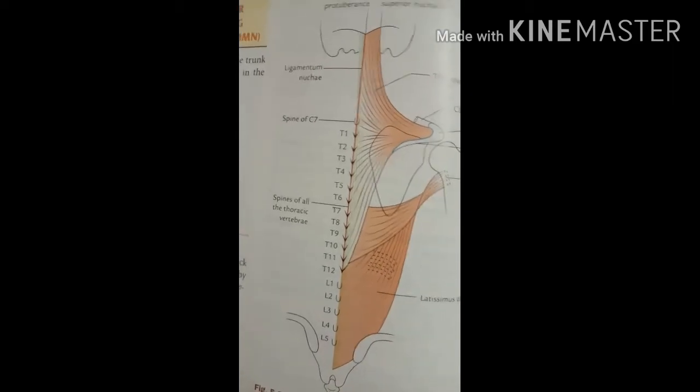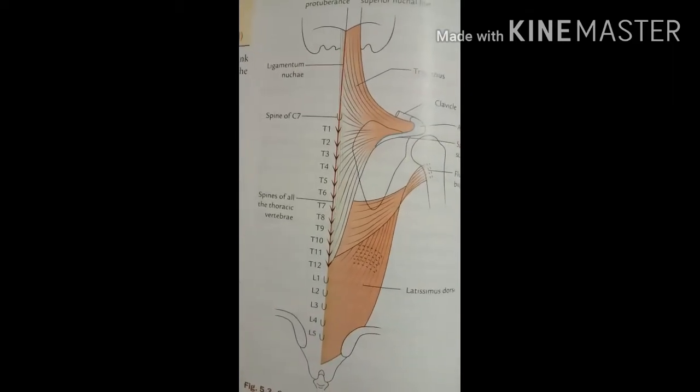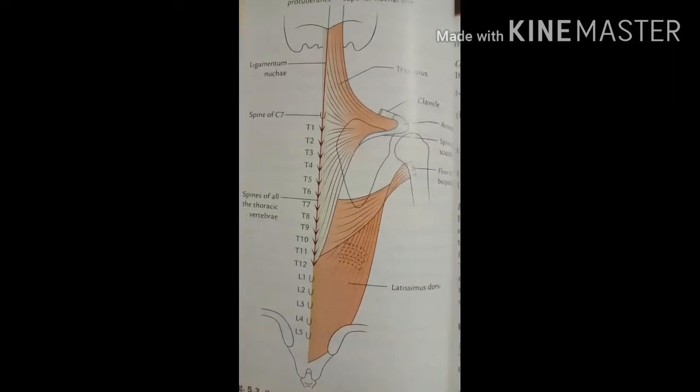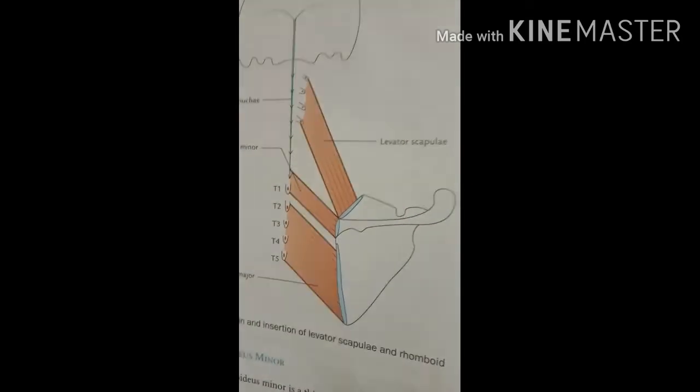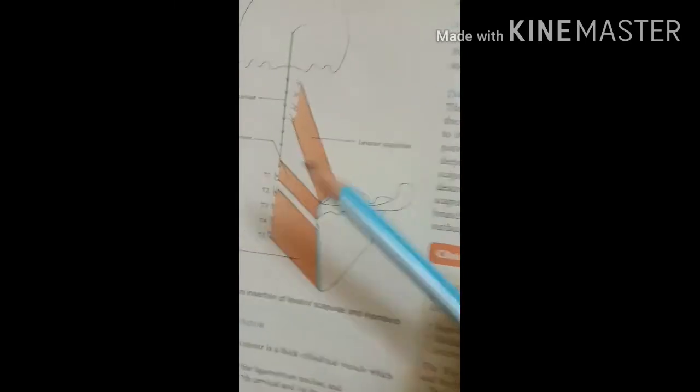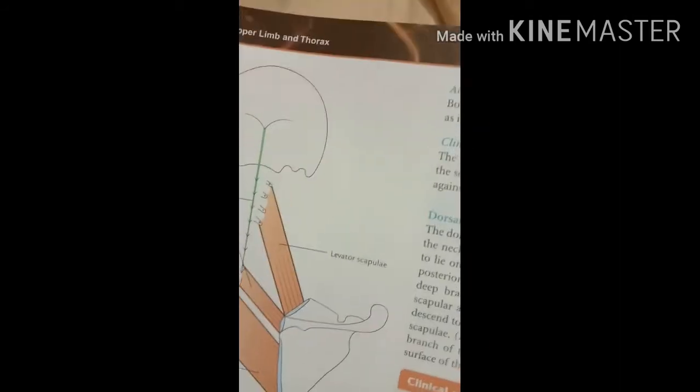Next, let's see the deep layer of muscles. In this diagram, you can see the three deep muscles: the levator scapulae, the rhomboidus minor, and the rhomboidus major.